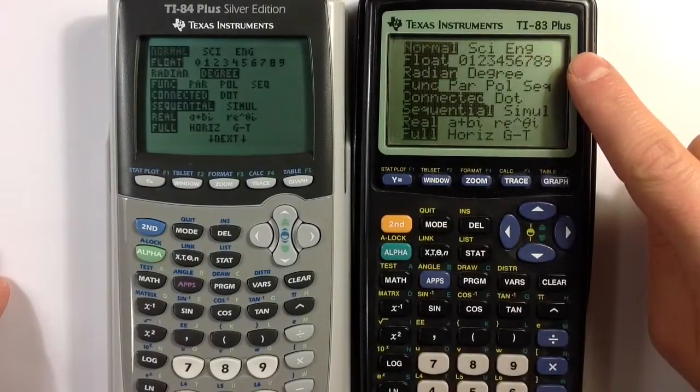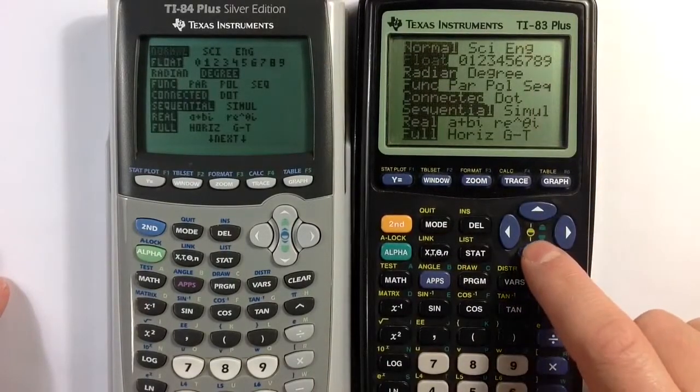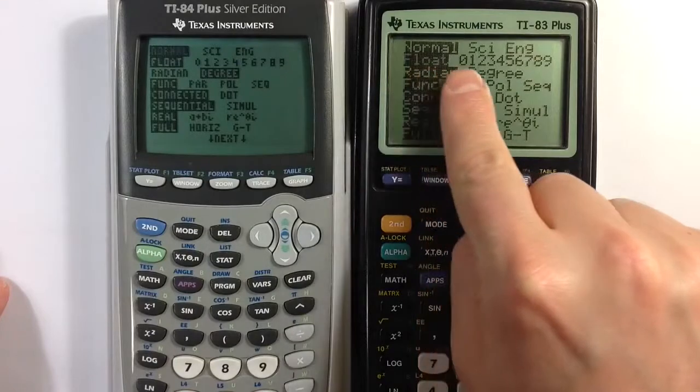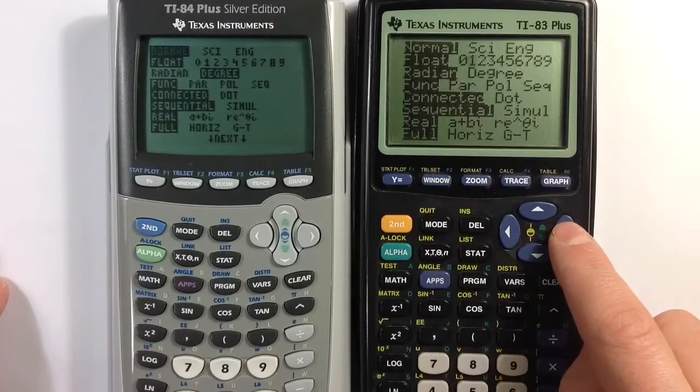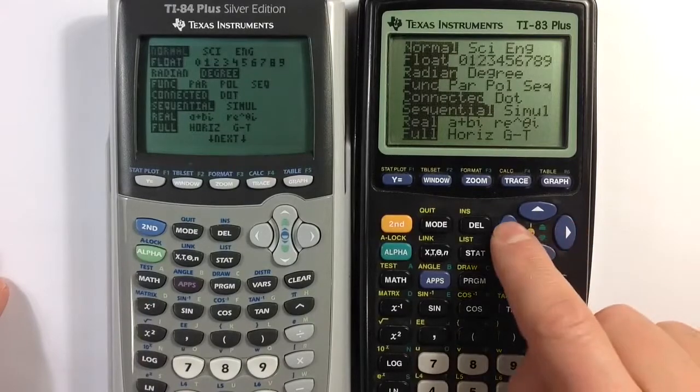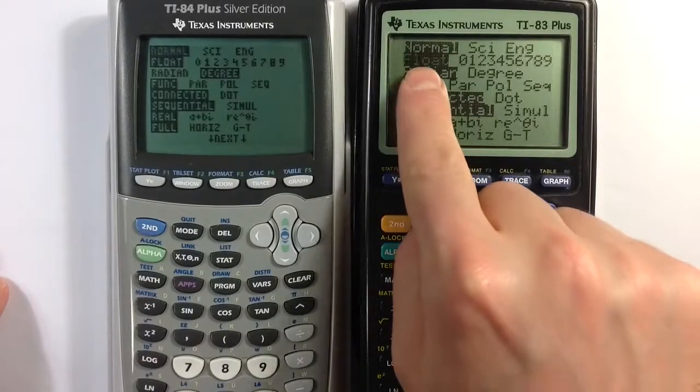A couple that are particularly important: the float line that starts with floating that has numbers 1, 2, 3, 4. That indicates the amount of rounding that you're going to ask the calculator to do. So float means that it'll just kind of naturally be whatever that number is.